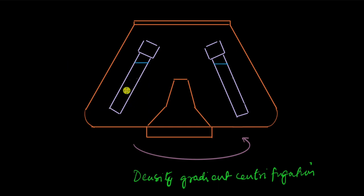So the substances that we usually make a density gradient of are, say, sucrose or cesium chloride. So the concentration of this substance increases towards the bottom of the tube.